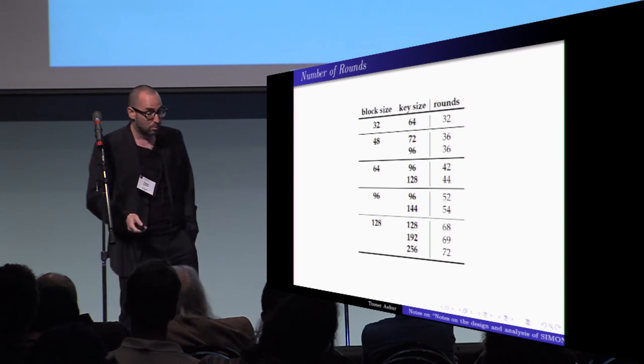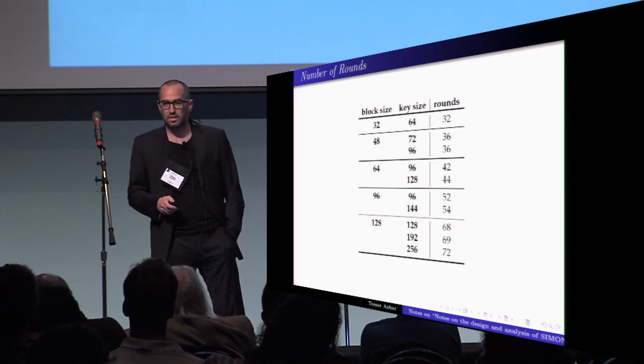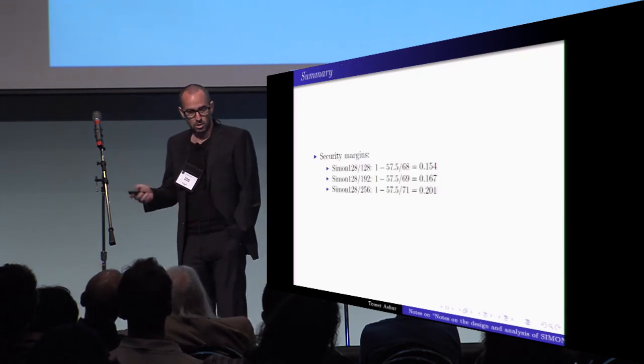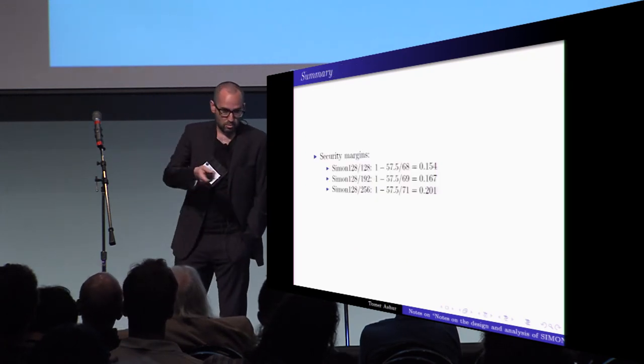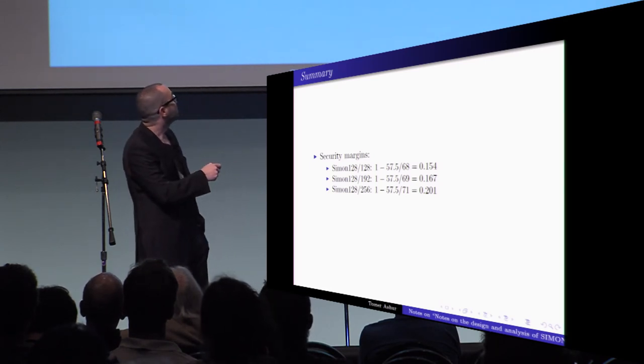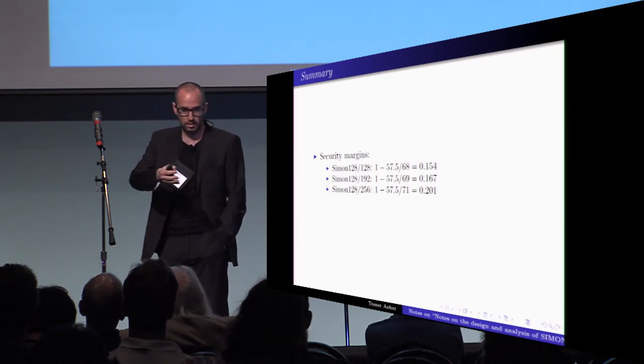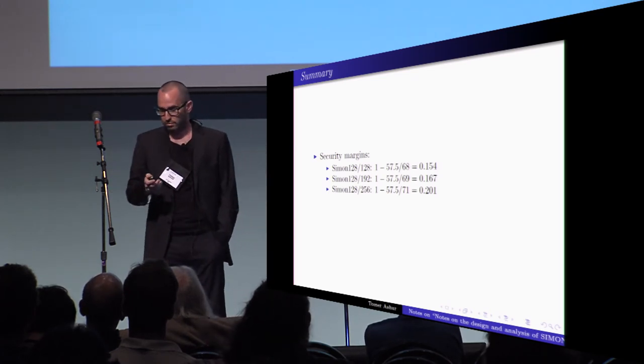we see that Simon 128 has three versions, with 68, 69, and 72 rounds. So doing a simple math, we see that, for example, for Simon 128, 128, we retain a security margin of 15.5% and then almost 17 and 20% for the other two versions.